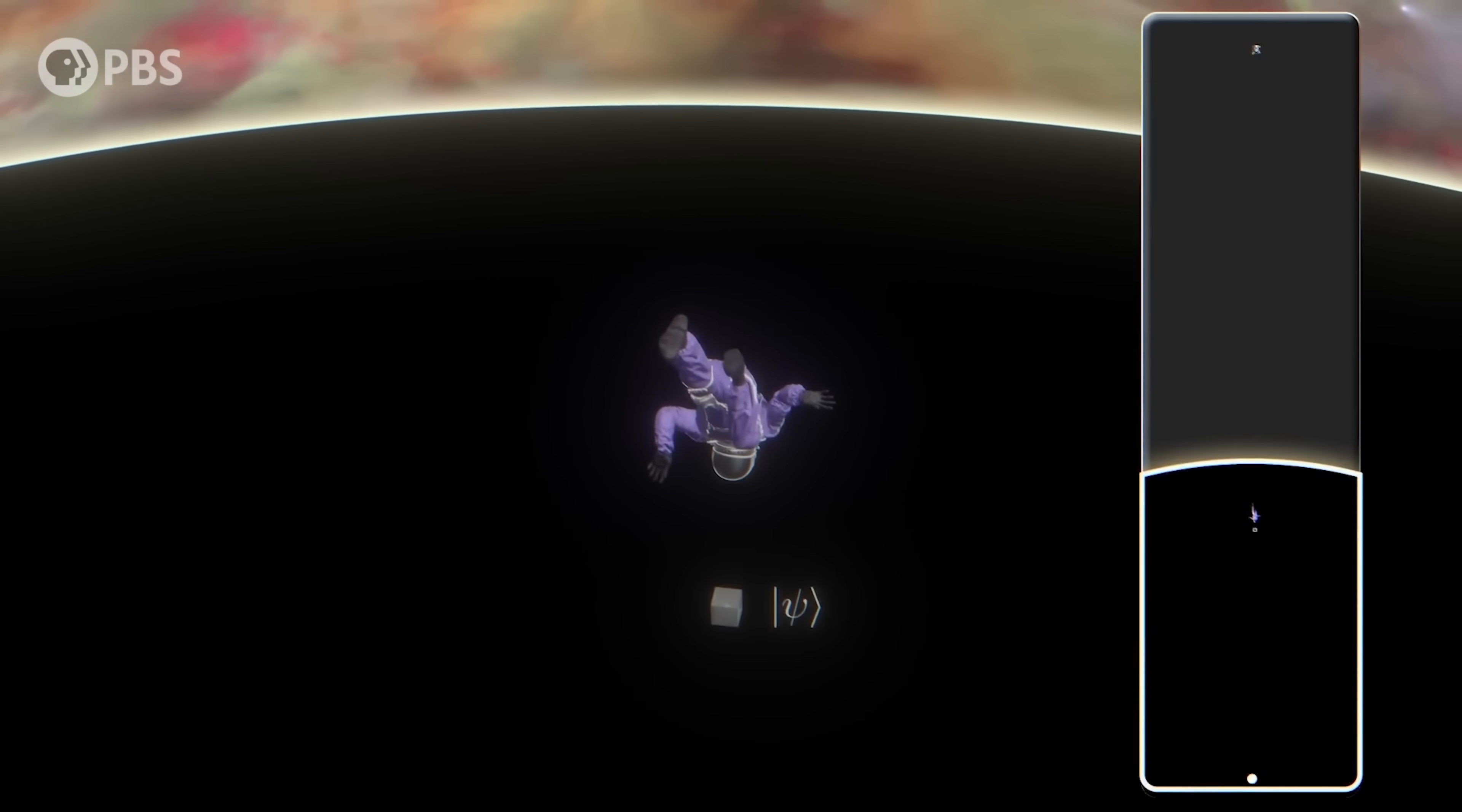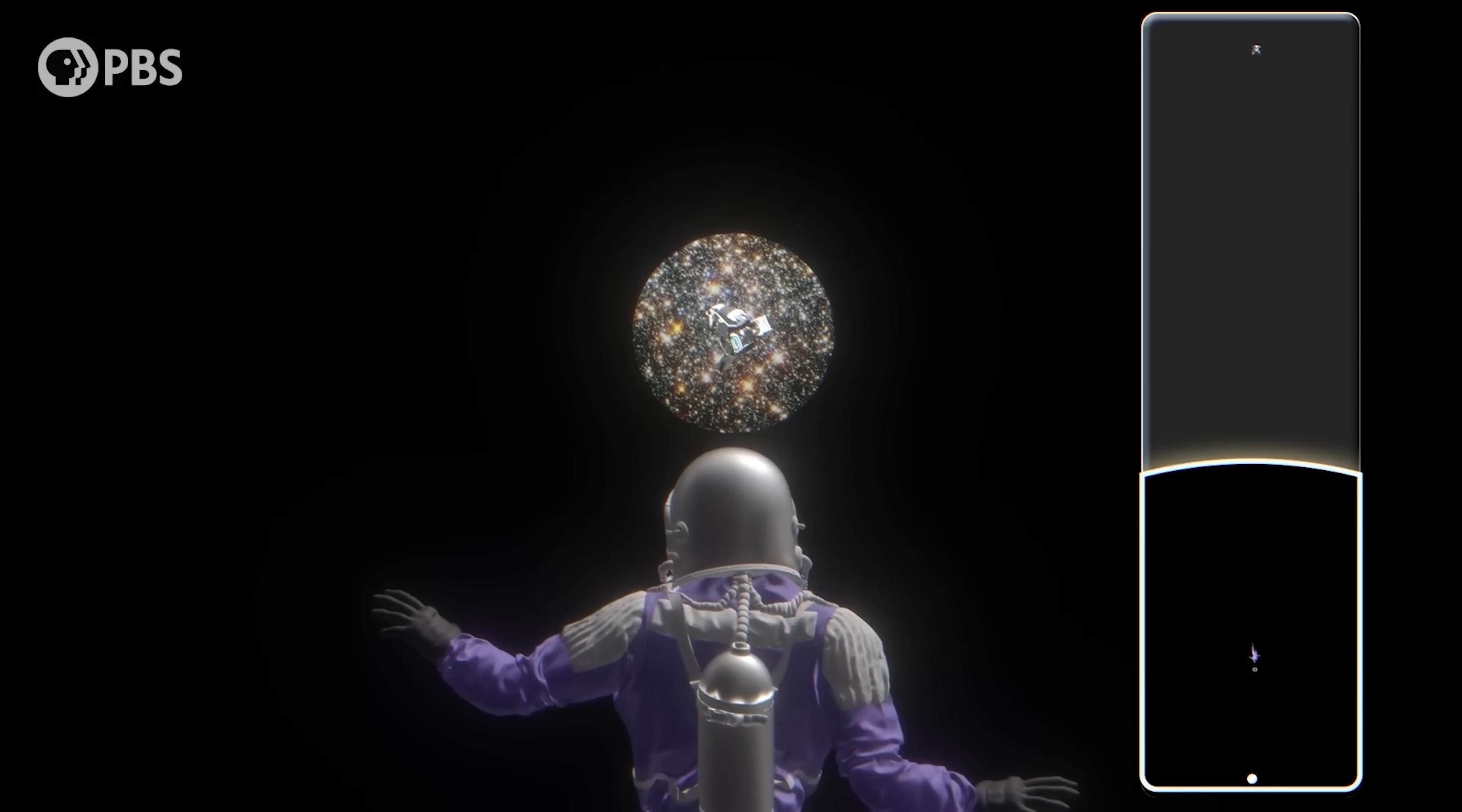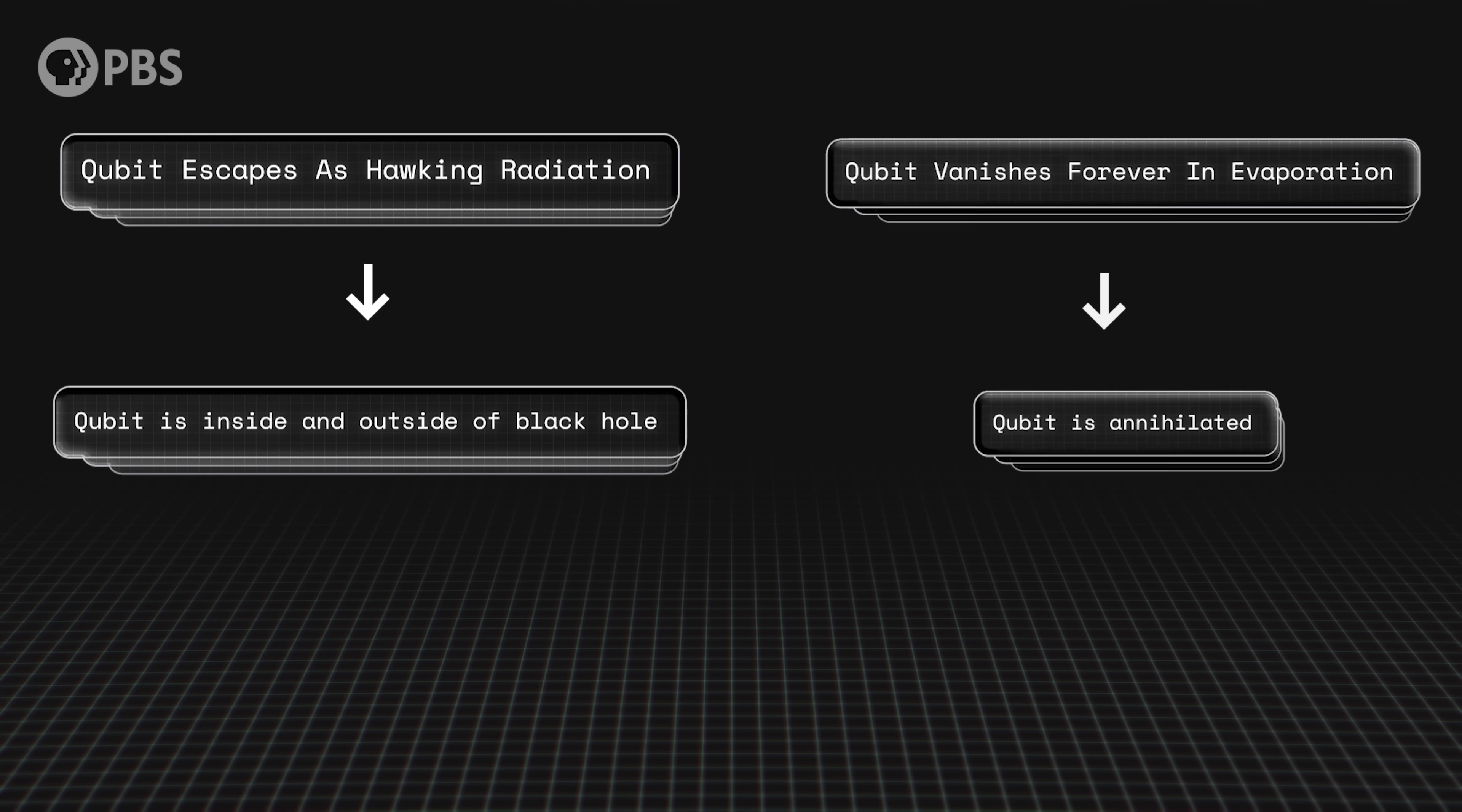She must, because according to the equivalence principle, a founding axiom of general relativity, Alice can't sense anything unusual when crossing that horizon. Meanwhile, Bob, watching from afar, has to either witness the qubit escape in the Hawking radiation leaked as the black hole evaporates, or the qubit vanish forever in that evaporation. In the first case, the qubit is duplicated. In the second it's annihilated.